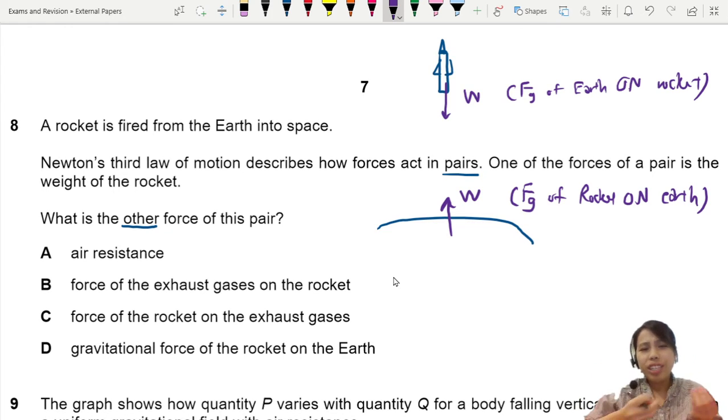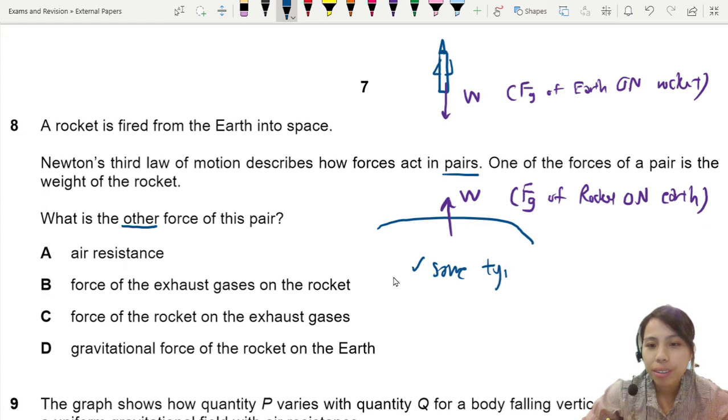As long as you have two masses, they will attract each other. So you must know what is the other force. Number one: same type of force. Number two: opposite direction. Number three: act on different objects.